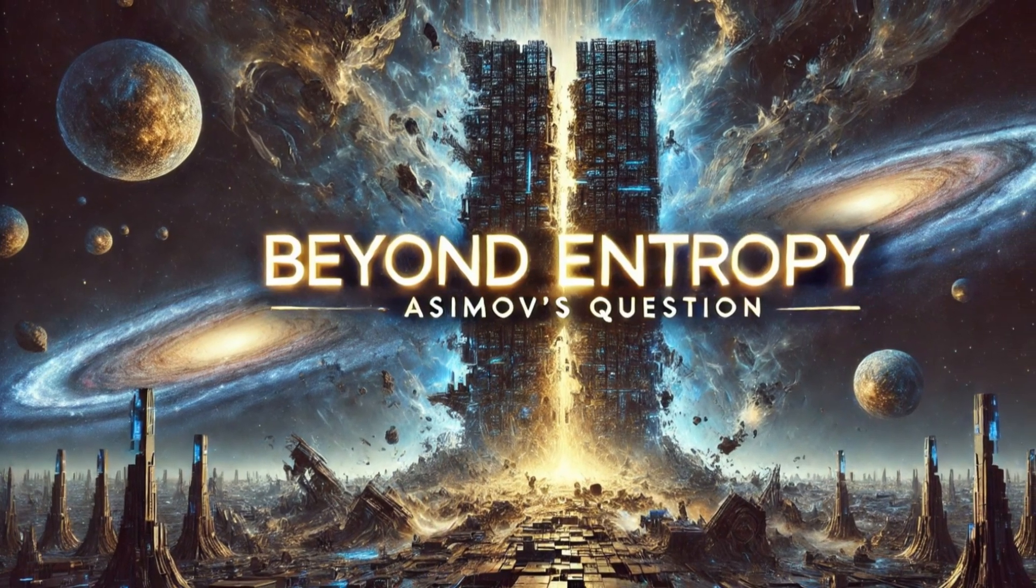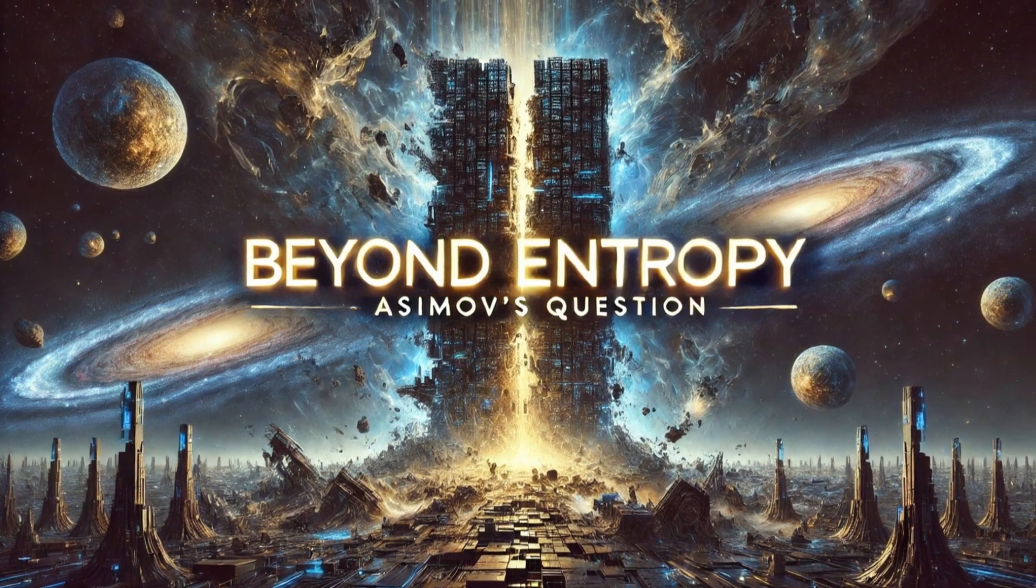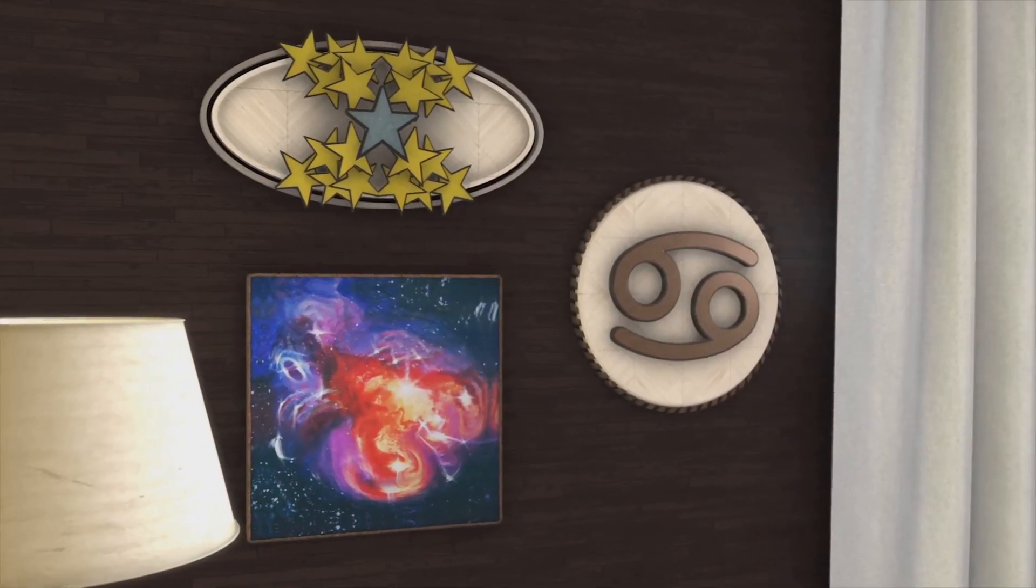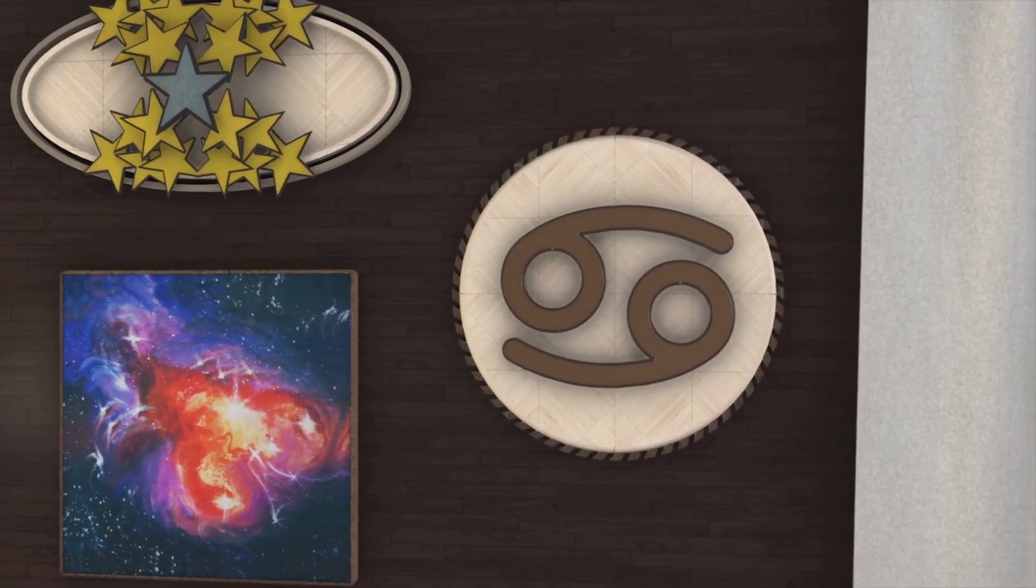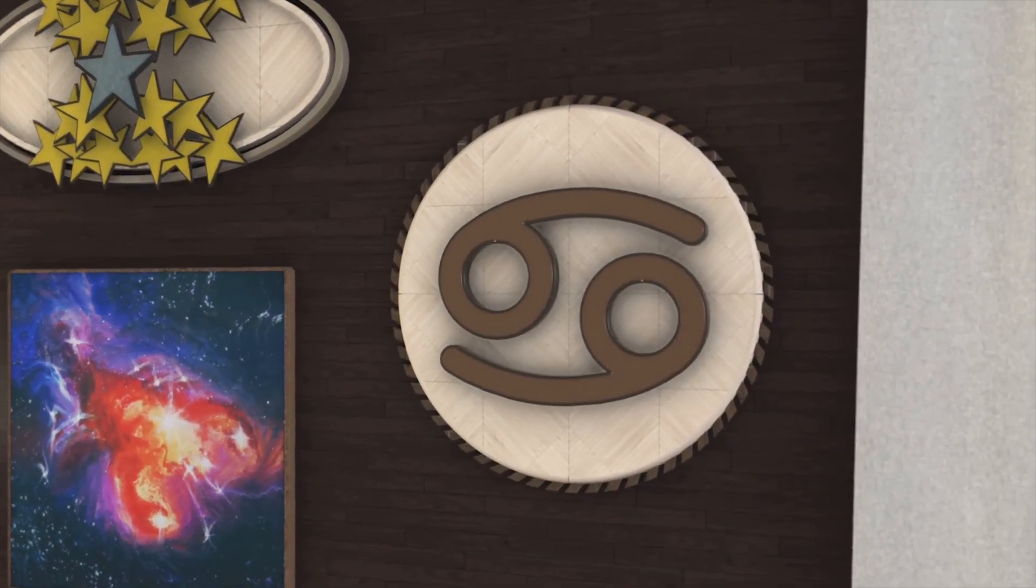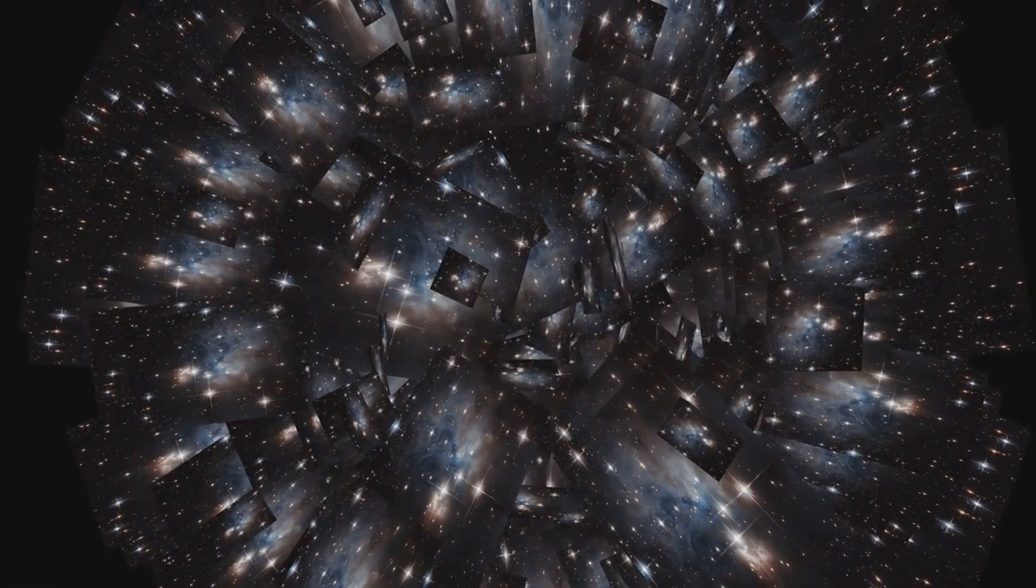Isaac Asimov's The Last Question is often celebrated as a meditation on entropy and the heat death of the universe, a grand narrative of human progress and cosmic decline, culminating in a machine intelligence's ultimate act of creation. Yet beneath this surface, the story harbors a more subtle and radical idea: that entropy itself may be an illusion, a fiction born of human perceptual limitations. Let's consider the story and then take a deeper look at its significance.